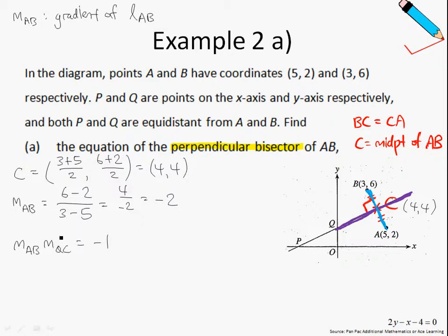So the gradient of AB is just negative 2. Gradient of QC times negative 2 equals negative 1, and dividing both sides by negative 2, I'll just get gradient of QC equals to half. We are almost there.